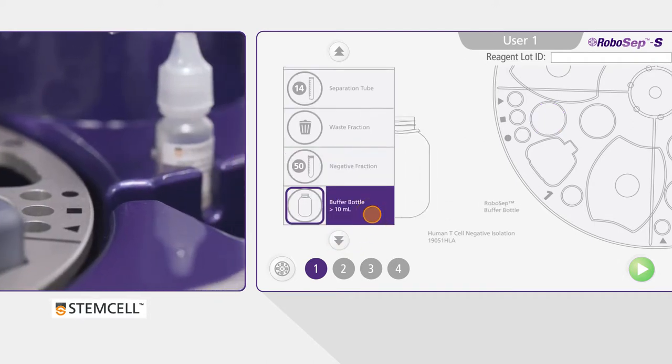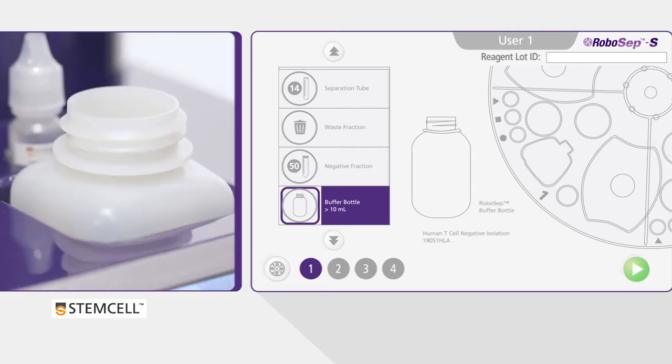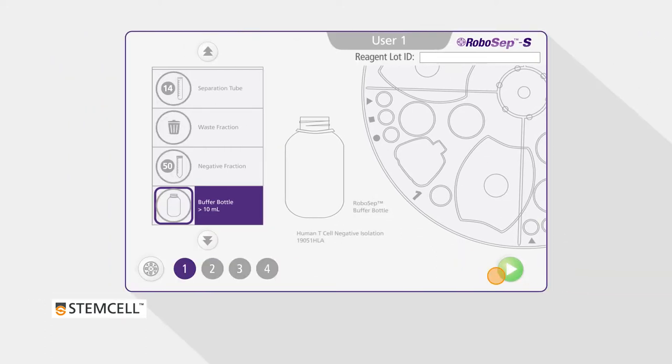Finally, ensure that the buffer bottle is in its corresponding compartment and uncap it. When a quadrant is completely loaded, press the green button on the lower right corner of the screen.